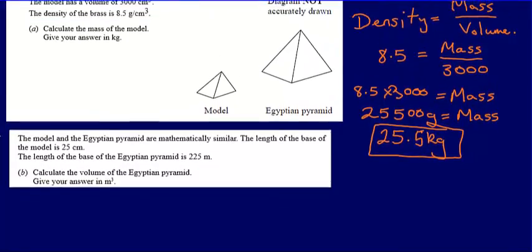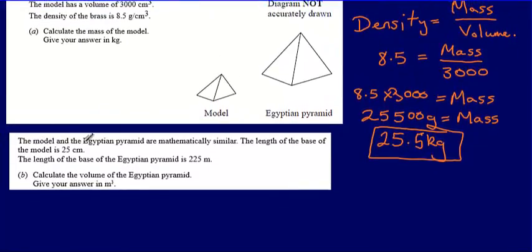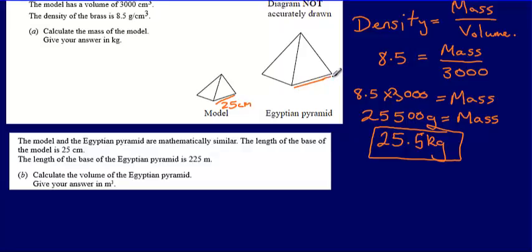For part B, we're told that the model and the Egyptian pyramid are mathematically similar. The length of the base of the model is 25 centimetres, and the length of the base of the Egyptian pyramid is 225 metres.